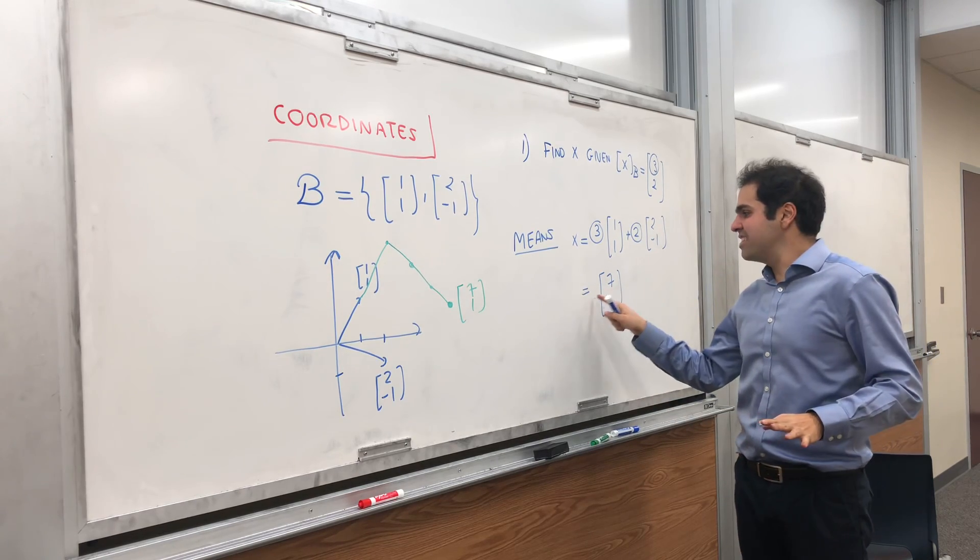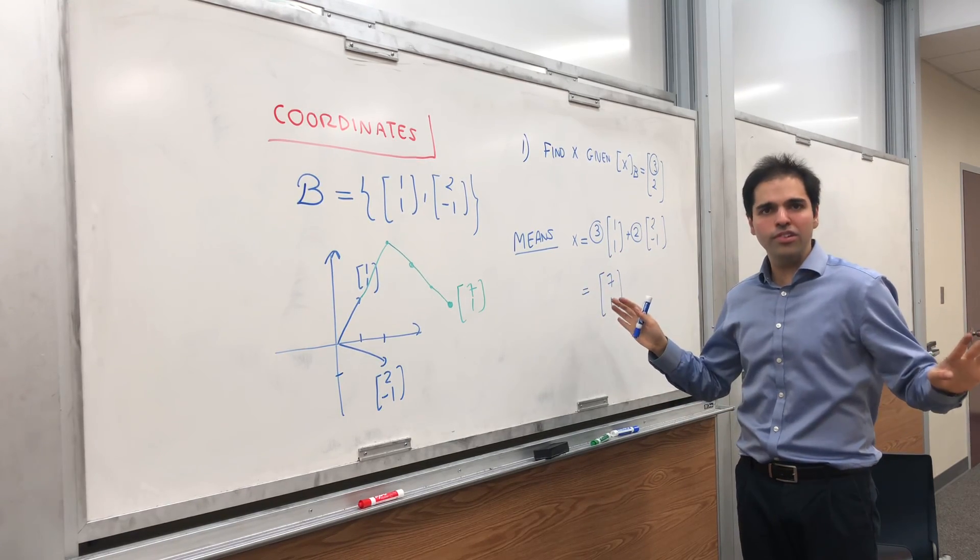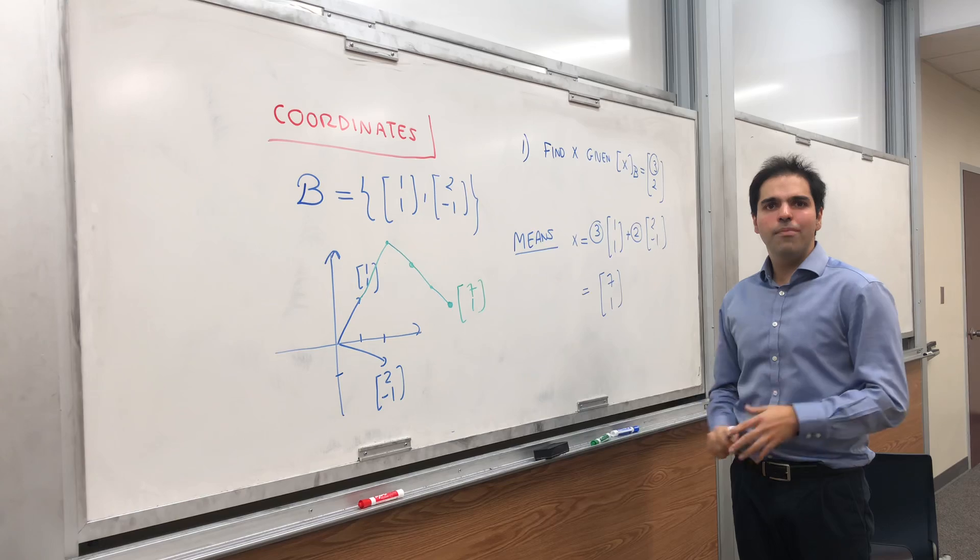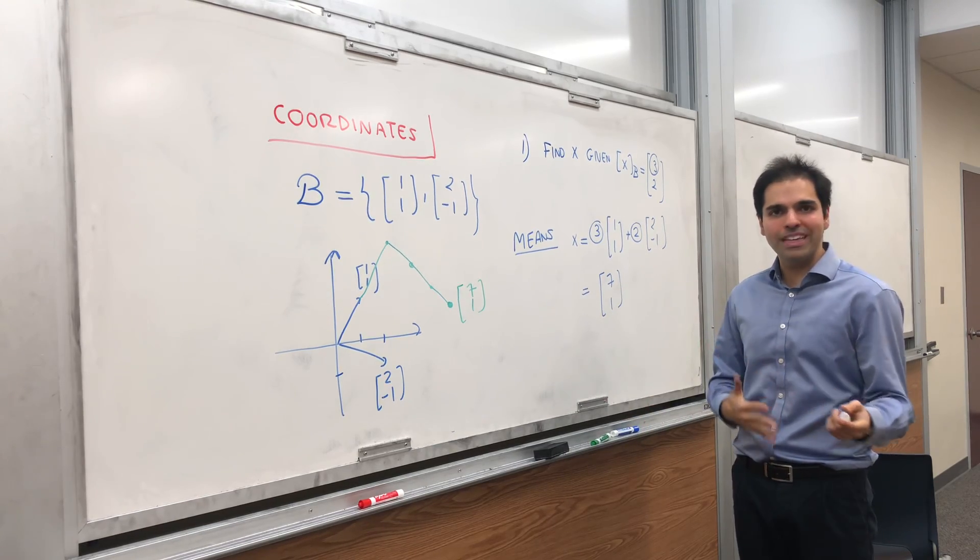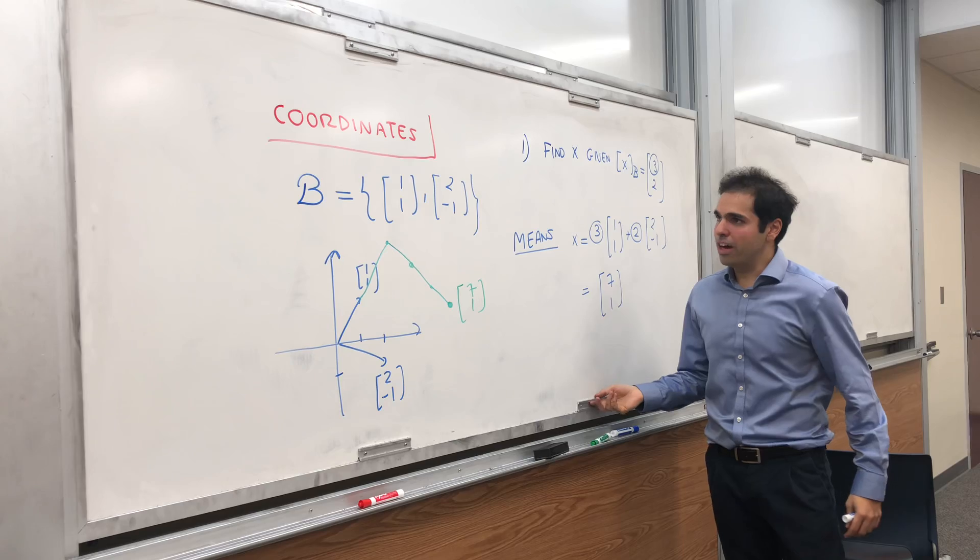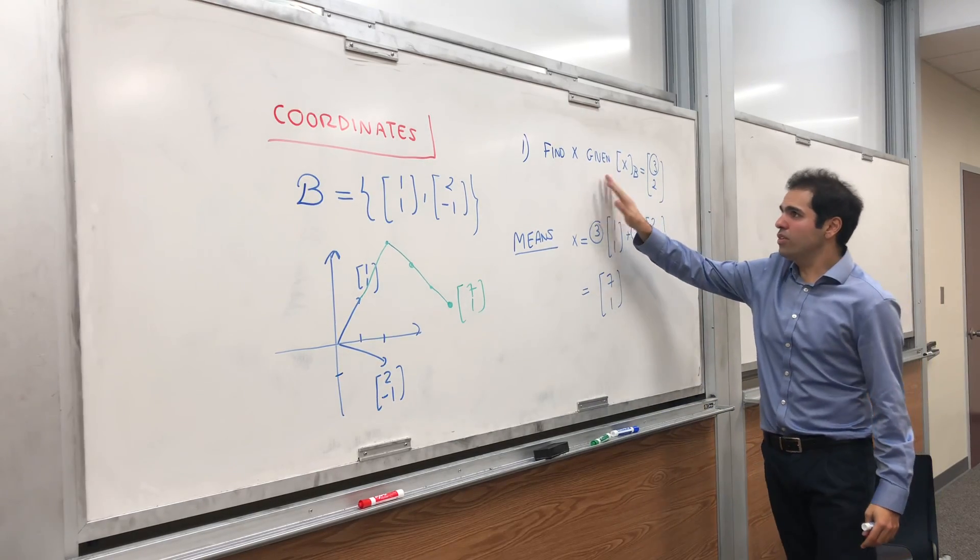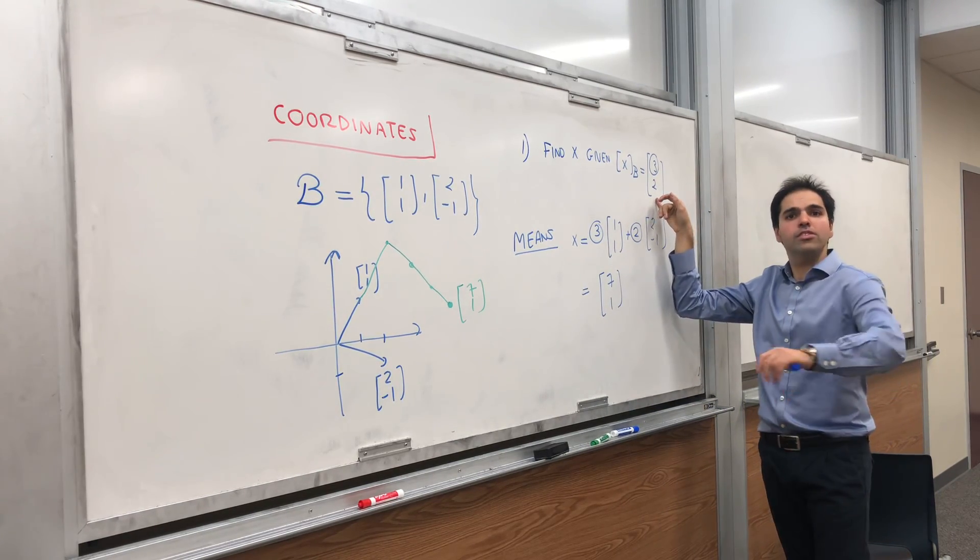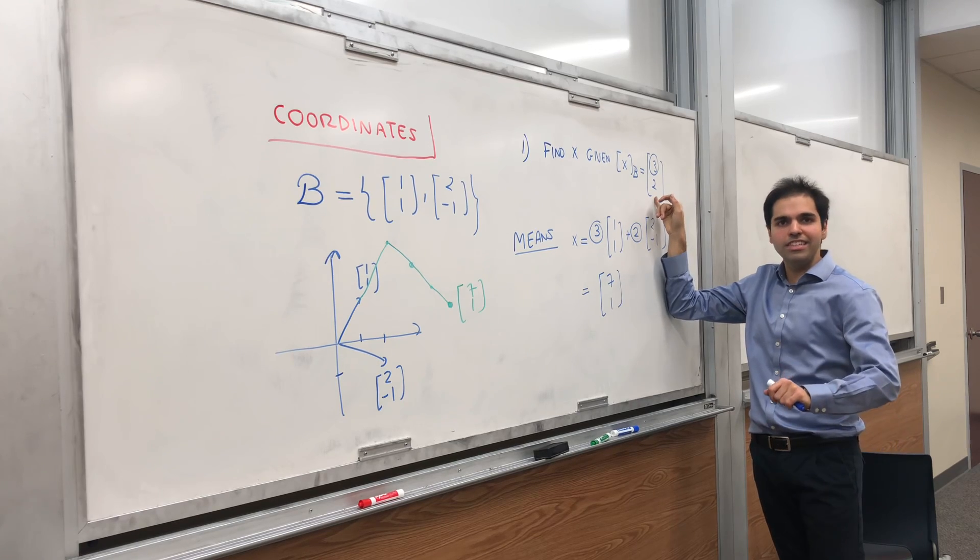Here it doesn't really make sense, because we have vectors in R2, but it turns out you can make this abstract with vector spaces, and you do have this idea of barcode lying around. Okay, so here we found the item given a barcode, so we scanned the item, which was easy.